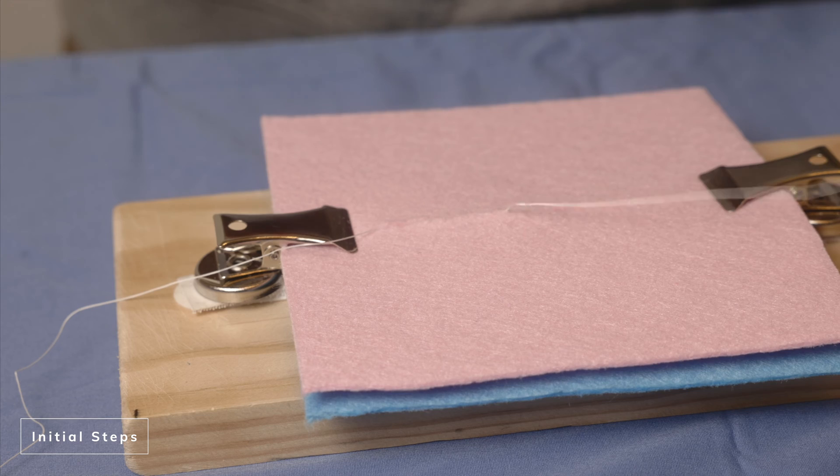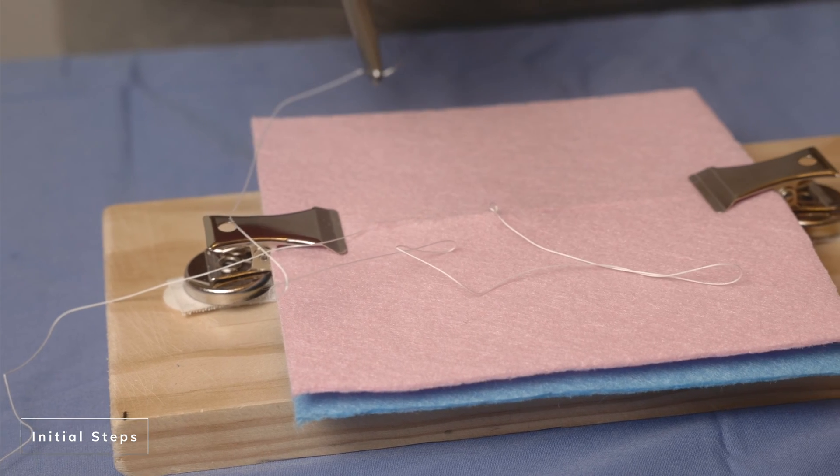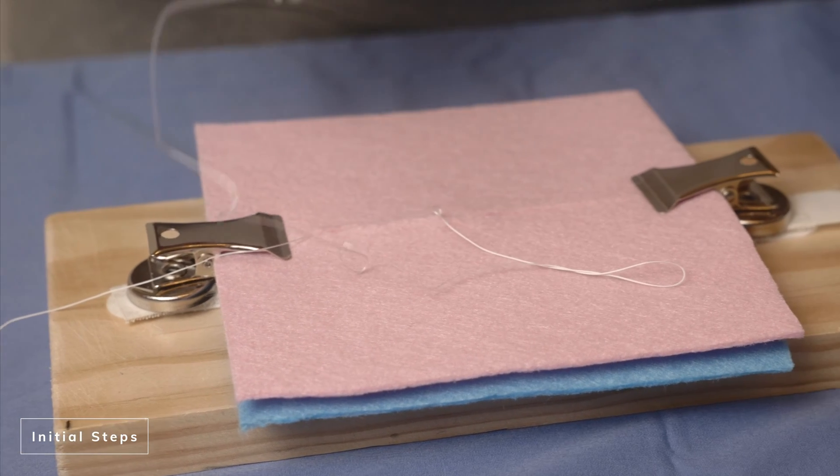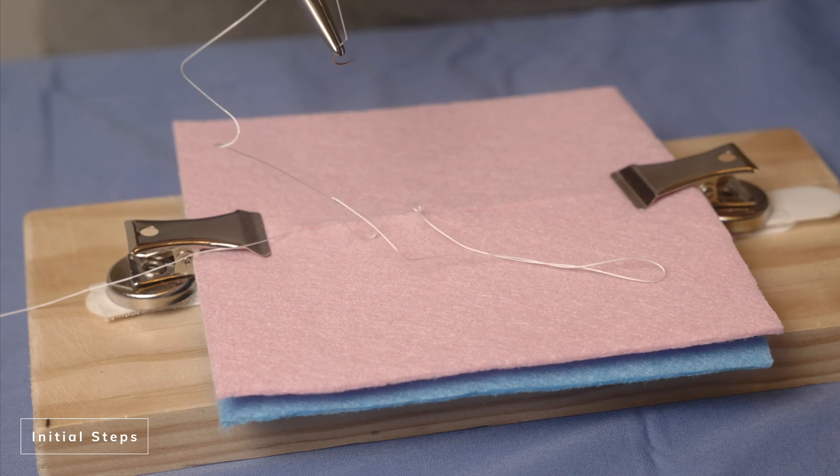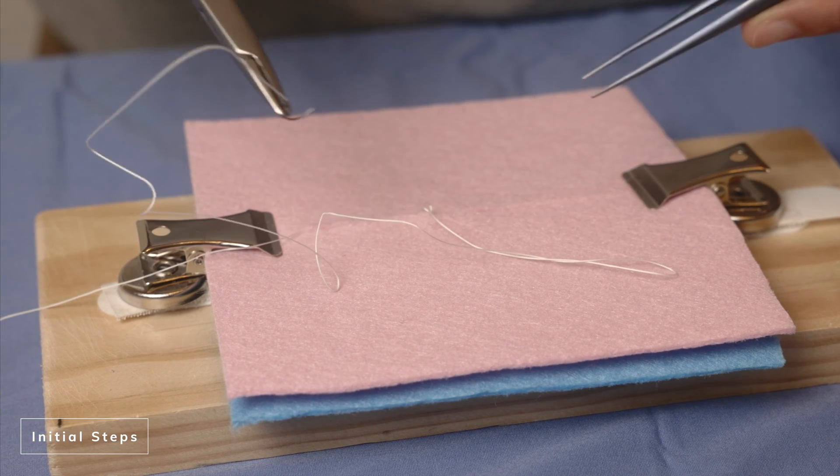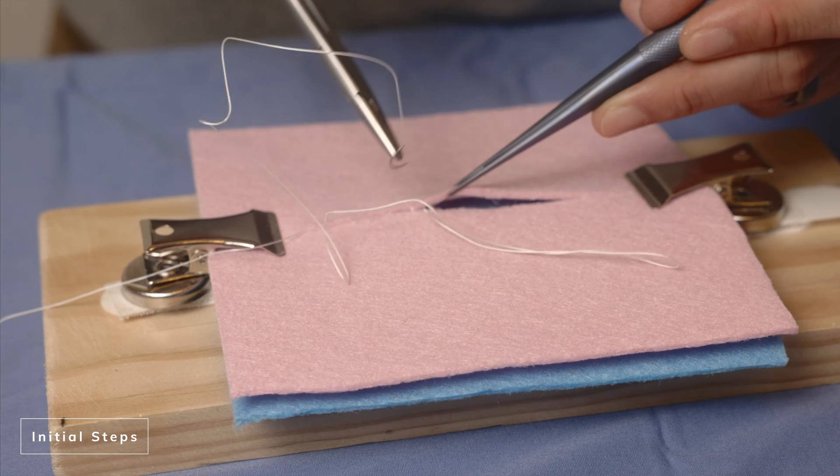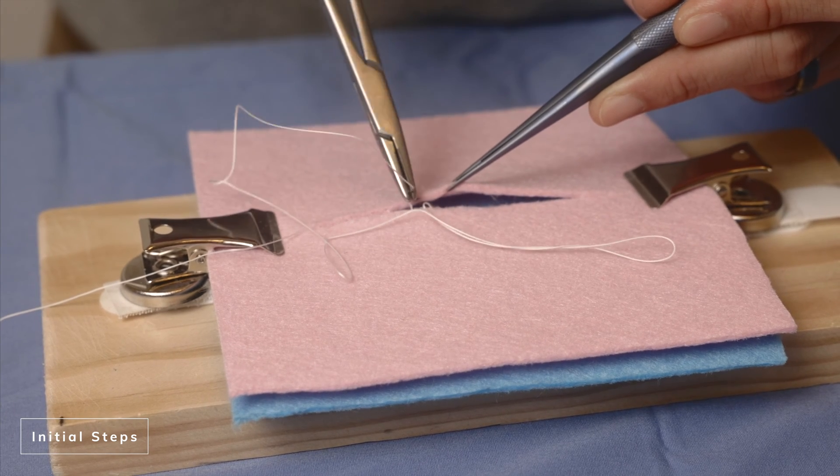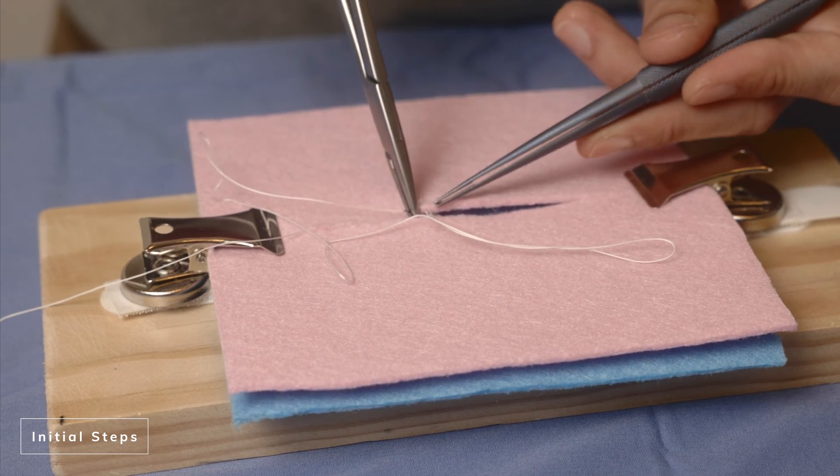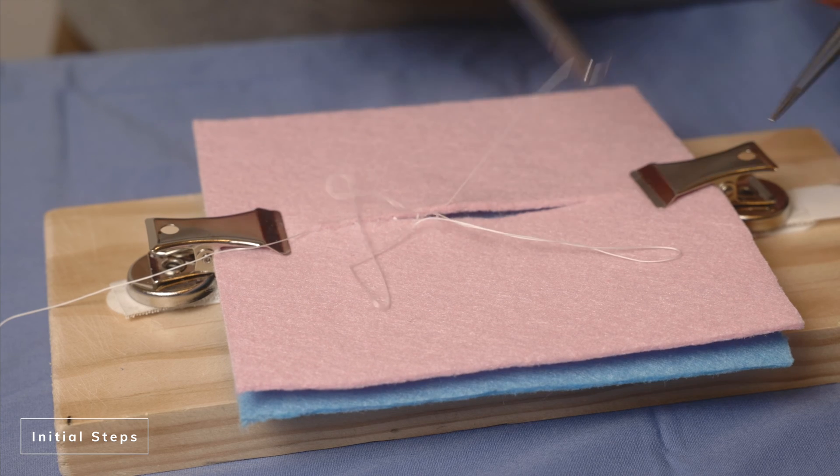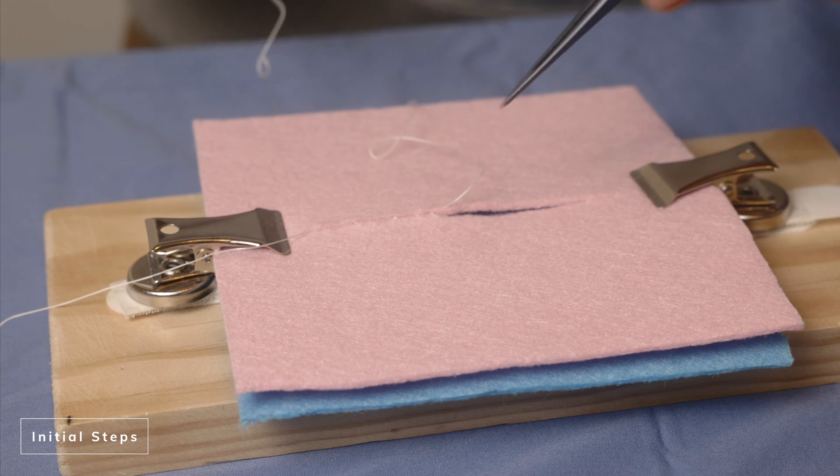You want to make sure that you grab enough skin that it has some strength to hold on to. At the same time, you don't necessarily have to grab so much skin that it dimples excessively. So that means you're rotating your wrist and making sure that the curve of the needle catches enough of the skin so that there's some strength to your closure.